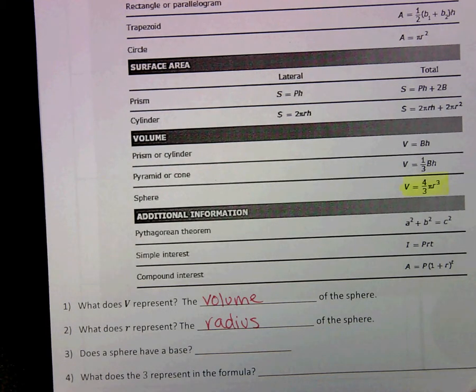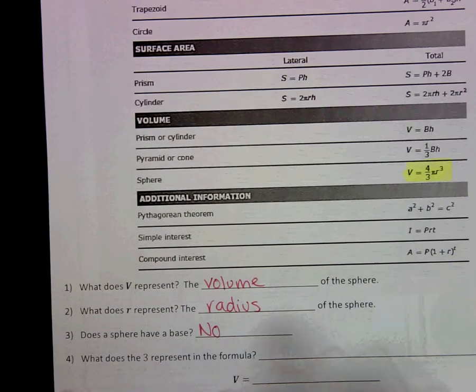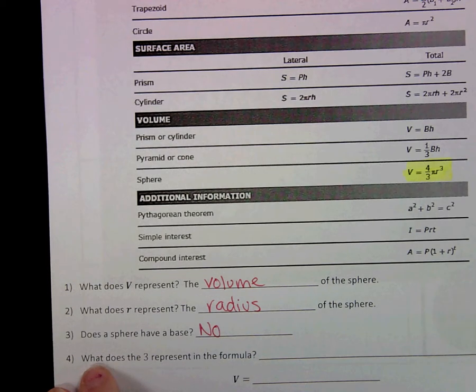Now a sphere doesn't have a base. When we're talking about our three-dimensional shape, typically we have a base where we have a length and a width. And then we have the height of the three-dimensional shape.